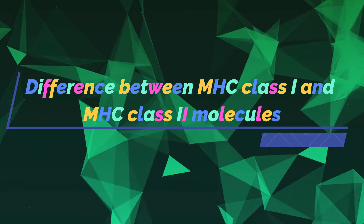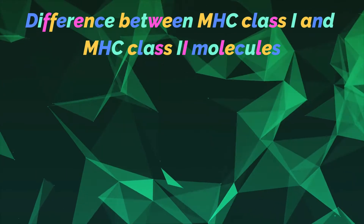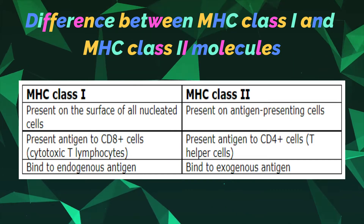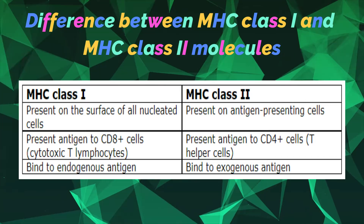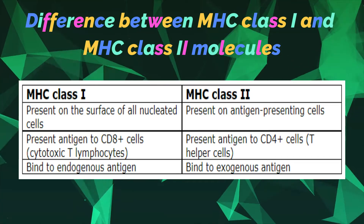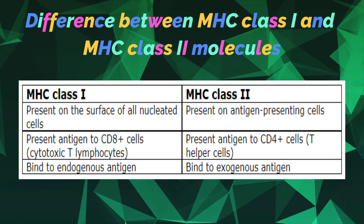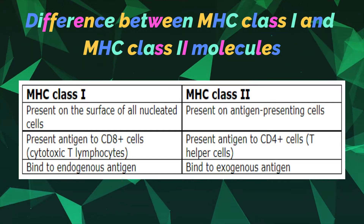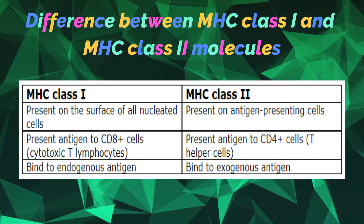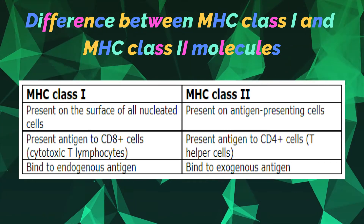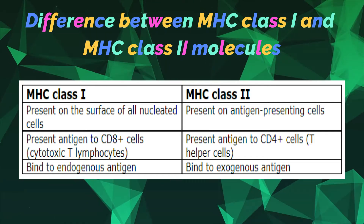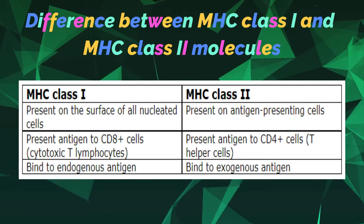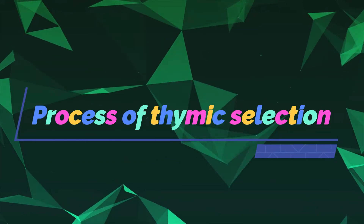The difference between MHC class 1 and MHC class 2 molecules: MHC class 1 is present on the surface of all nucleated cells, whereas class 2 is present on antigen-presenting cells. MHC class 1 presents antigen to CD8-plus cells which are cytotoxic T lymphocytes, whereas class 2 presents antigen to CD4-plus cells which are T helper cells. Lastly, class 1 binds to endogenous antigens whereas class 2 binds to exogenous antigens.